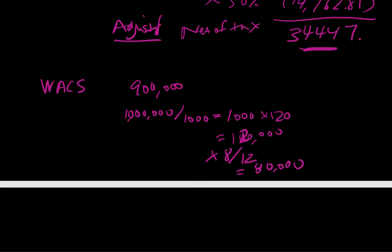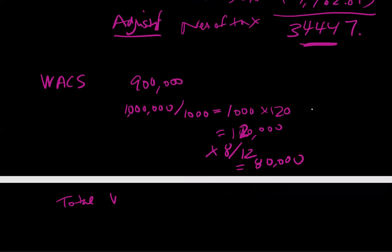So now our total weighted average common shares, and it's weighted because we included the period of time, is going to equal this 900,000 plus this 80,000, so we're going to have 980,000.